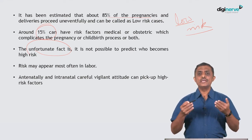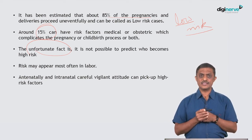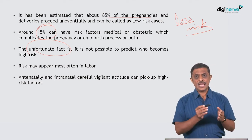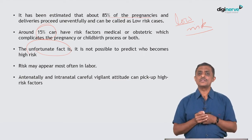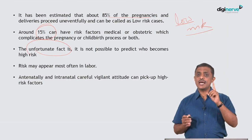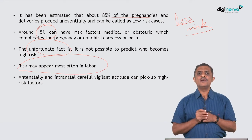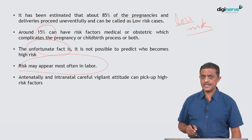The unfortunate fact is that we are not able to predict who will be high risk. There is a specific group of women in whom you can identify high-risk factors early, but in most of them there are no risk factors at the beginning. As pregnancy progresses, or sometimes even during labor, new risk factors can creep in. So risk is unpredictable and may appear most often in labor, warranting a very vigilant attitude both in the antenatal period and during labor.